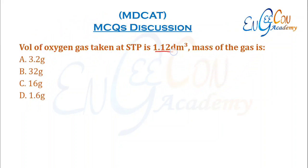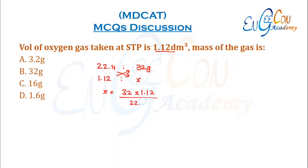Volume of oxygen gas taken at STP is 1.12 dm³. Mass of the gas: 22.4 dm³ = 1 mole of oxygen = 32 g. We have 1.12 dm³ of oxygen, so X = (32 × 1.12) / 22.4. Since 1.12 / 22.4 = 0.05, then 32 × 0.05 = 1.6 grams. So D is the correct option.